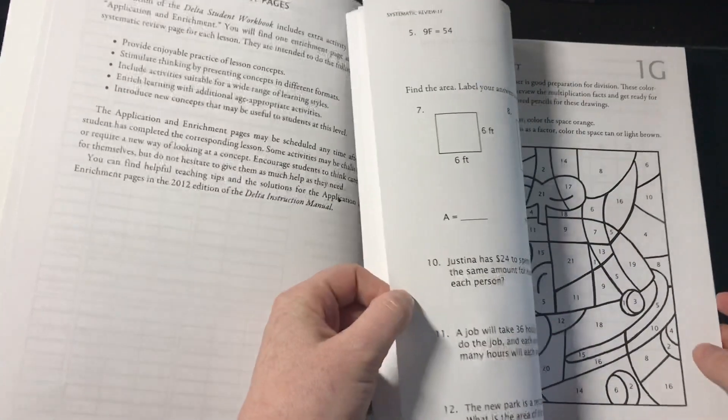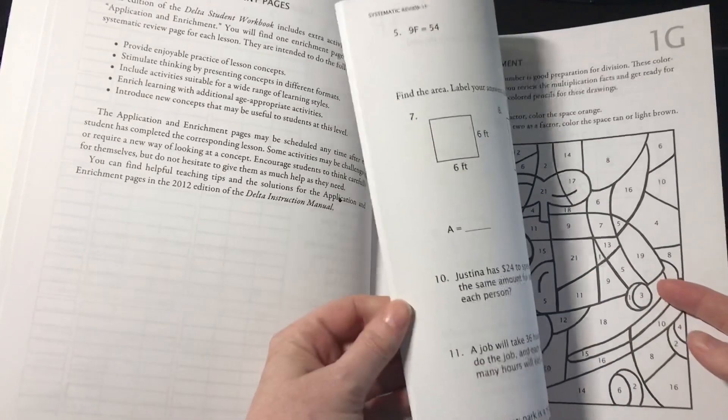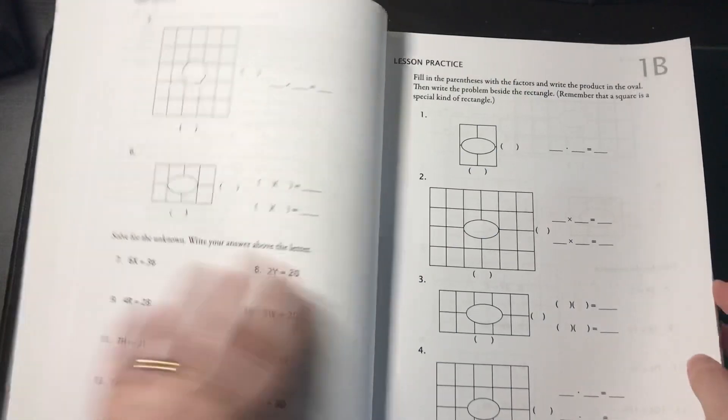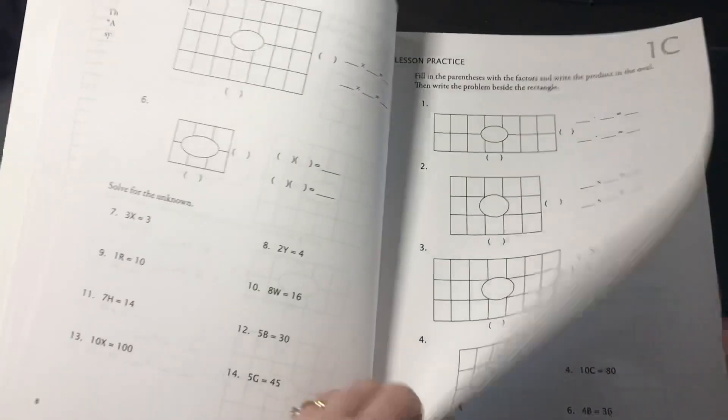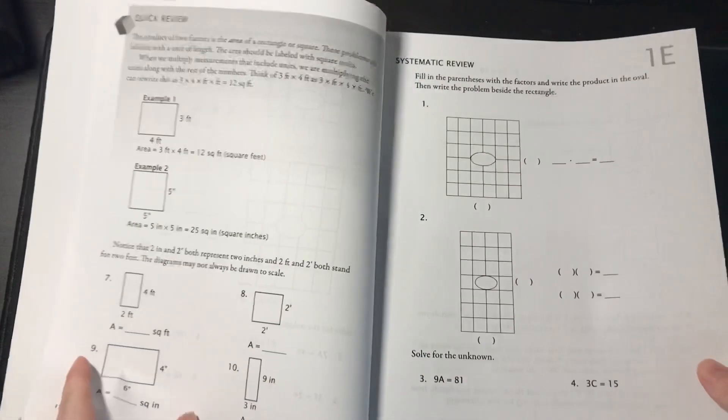So as you can see, each lesson one has A, B, C, D, E, F, G. So let me give you a look through that. A, B, it's always one side, front and back. The problems are spaced out nicely, so it's not too much work. There's no color though.